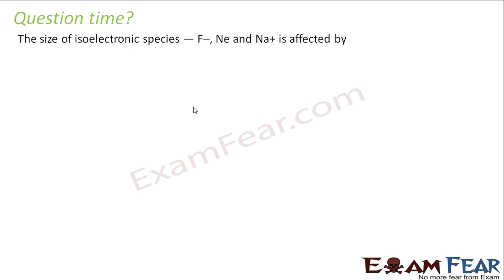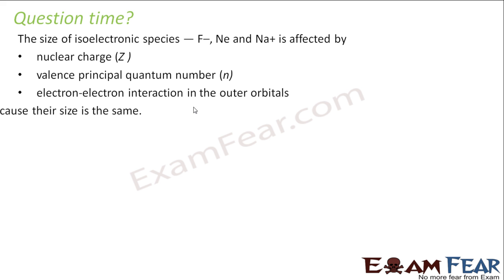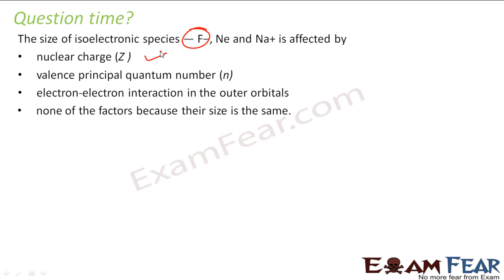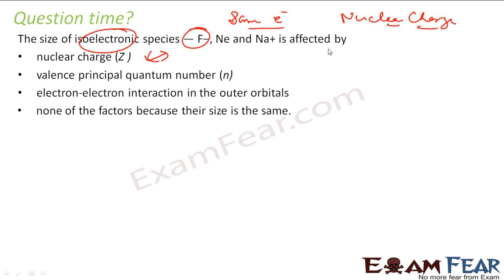The size of isoelectronic species is affected by nuclear charge, principal quantum number, and electron-electron interaction. For isoelectronic species, they have the same number of electrons, so the principal quantum number and electron-electron interactions will be the same. It is the nuclear charge which determines the size of the atom in isoelectronic species.